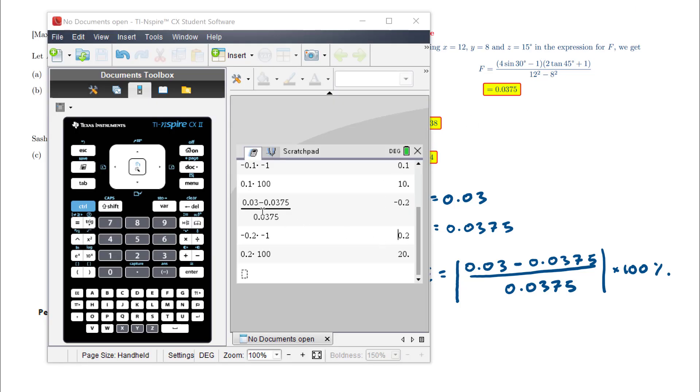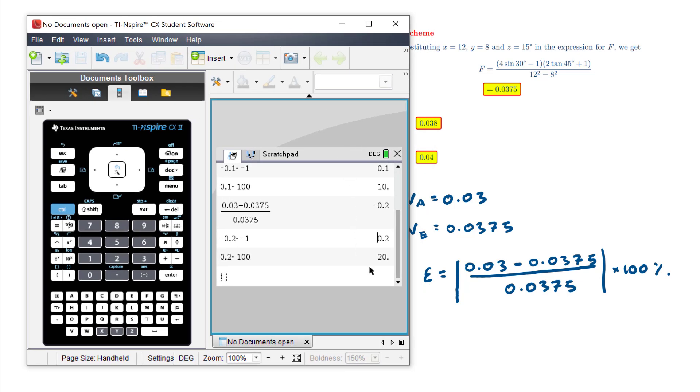I calculated this in advance. You can see these last three lines of working here is what was required to find this answer. Sasha's percentage error was 20%.